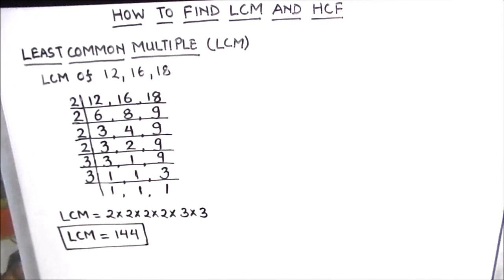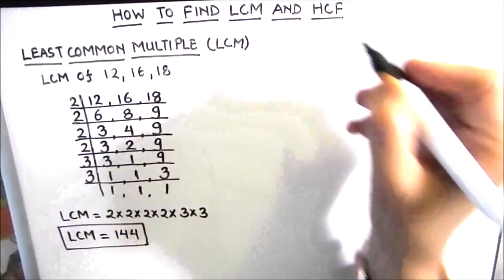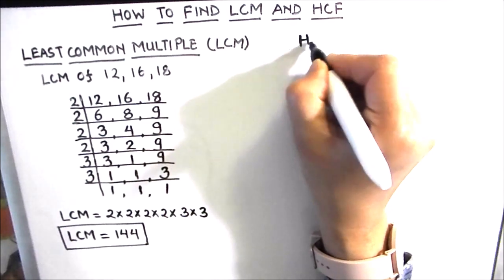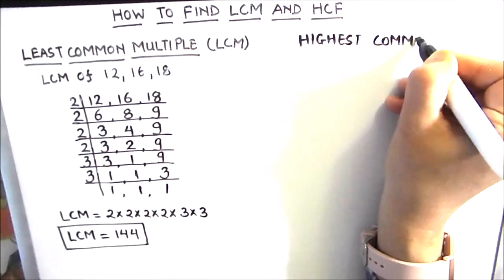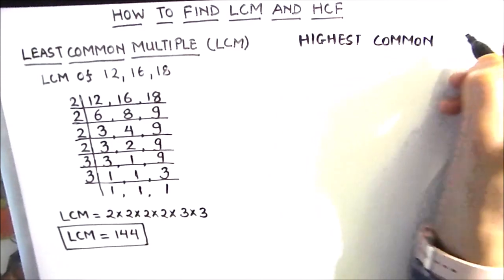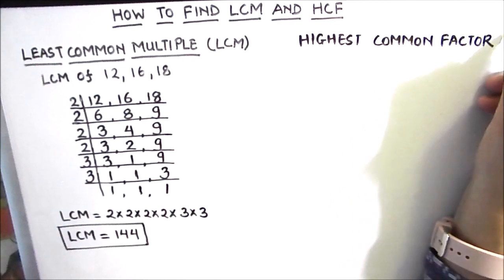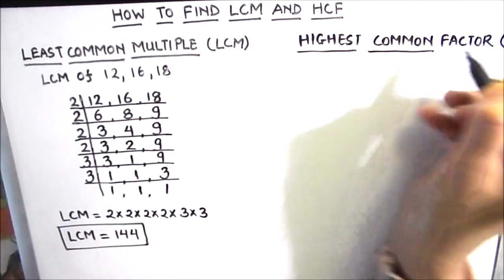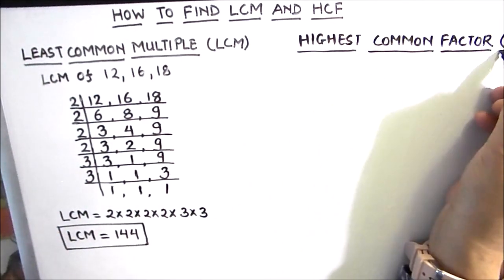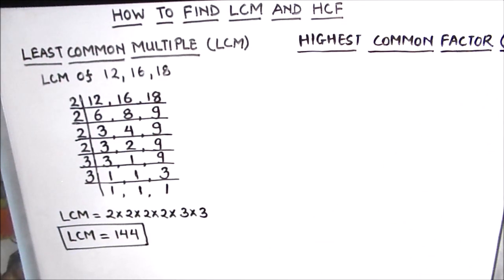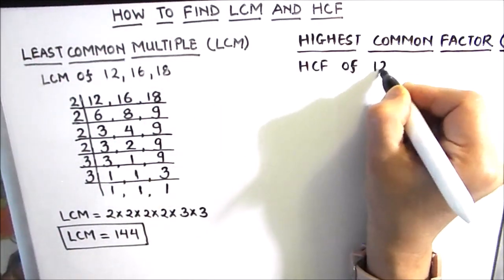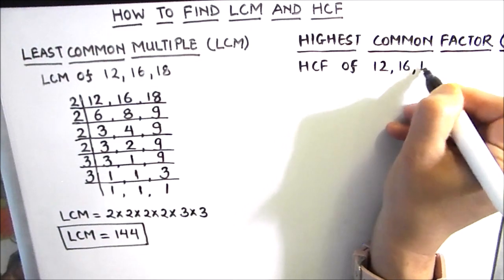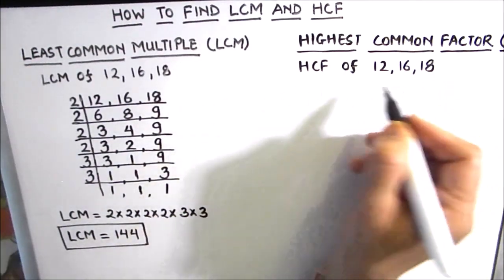Next we will find the HCF of the three numbers. The highest common factor, or HCF, is also known as the GCF or greatest common factor. The HCF of the three numbers is the largest number that divides all three numbers without leaving a remainder. Let us find the HCF of 12, 16, and 18.